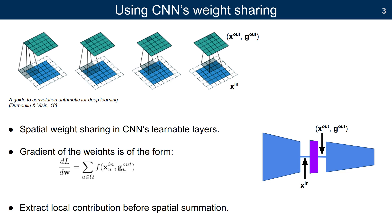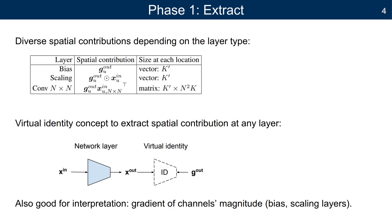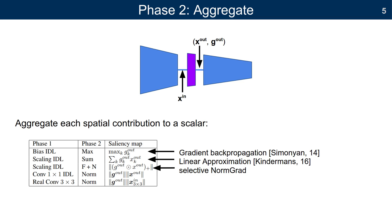We interpret saliency maps as a measure of how much the pixels contribute to the gradients of the weights. First, we extract at each pixel the local gradient contribution. Then we aggregate this information to a 2D saliency map. This framework can then be used to derive existing methods like linear approximation or new saliency methods.